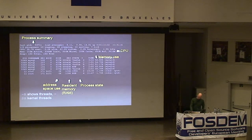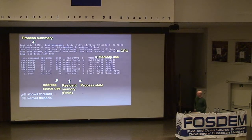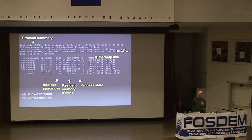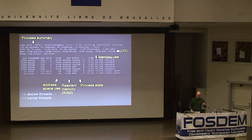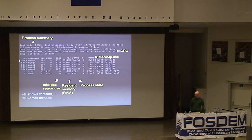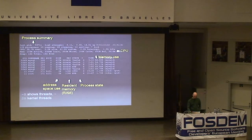Useful options for top are capital H, which breaks down each process by threads — in this case a single process showing five threads — and the S option, which shows kernel threads or system processes.